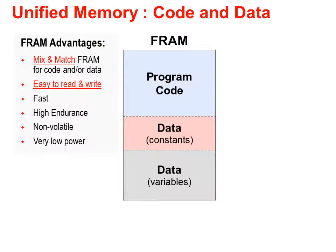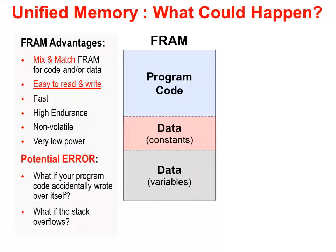Here's a simple but typical use of FRAM. Because we can use it for variable data, we might see it being used for three different things: program code, constant or non-volatile data, and variable data. FRAM provides great flexibility. But looking more closely, what could go wrong? If you said to yourself 'what happens if there's a stack overflow,' you're on the right track. The real problem is: if FRAM is so easy to write to, what prevents accidental writes into program code addresses?